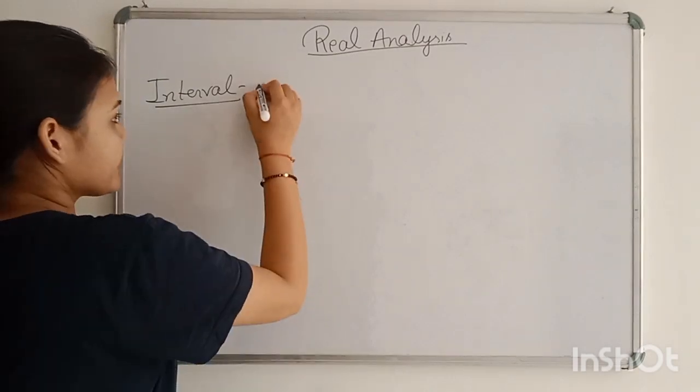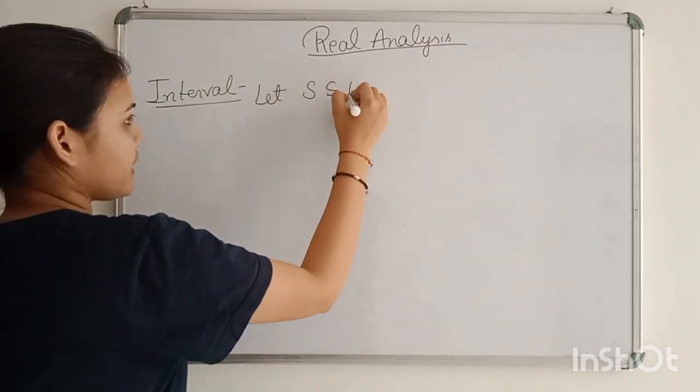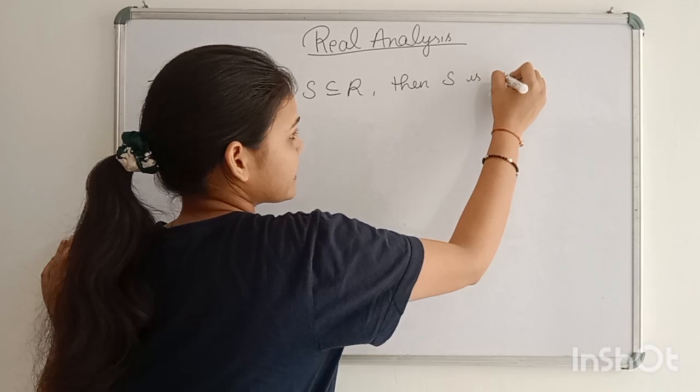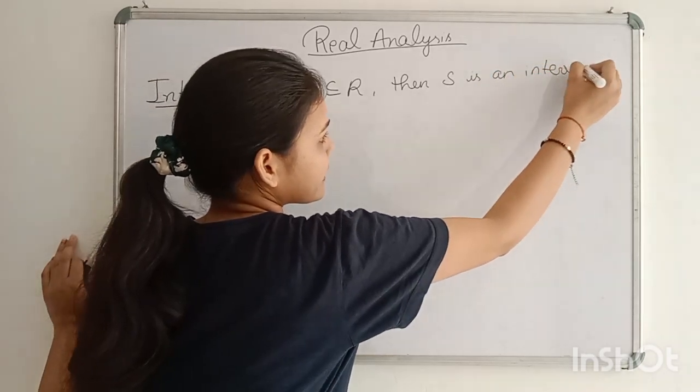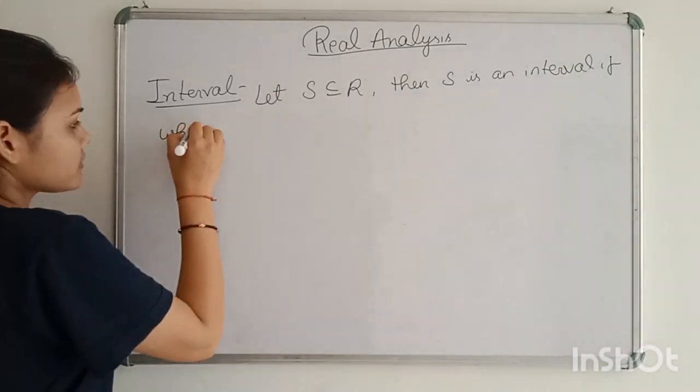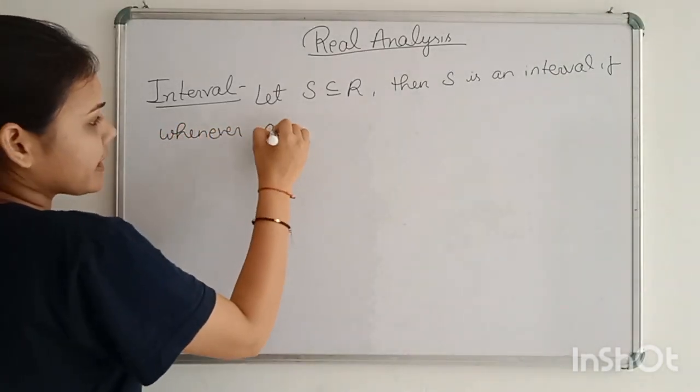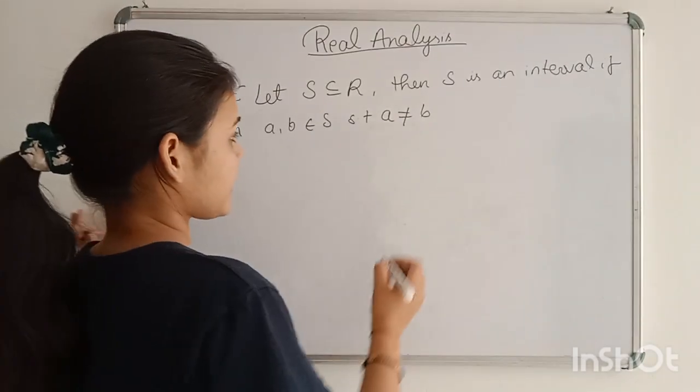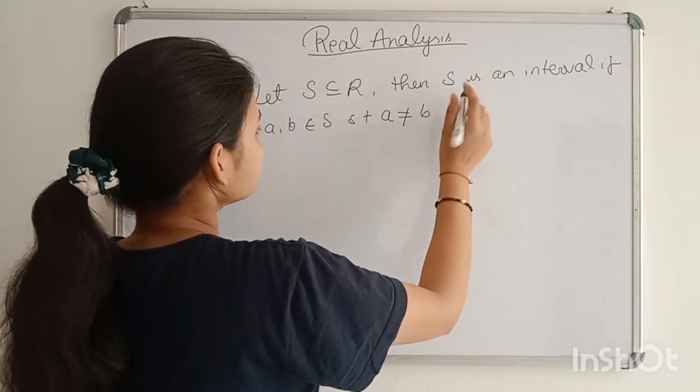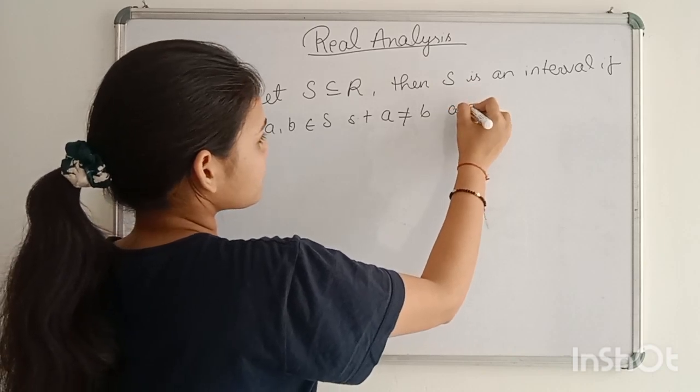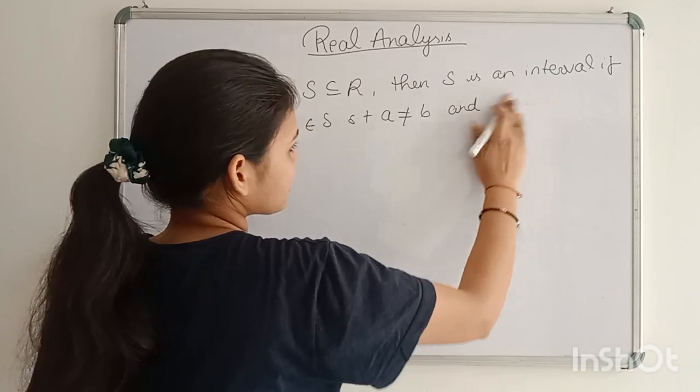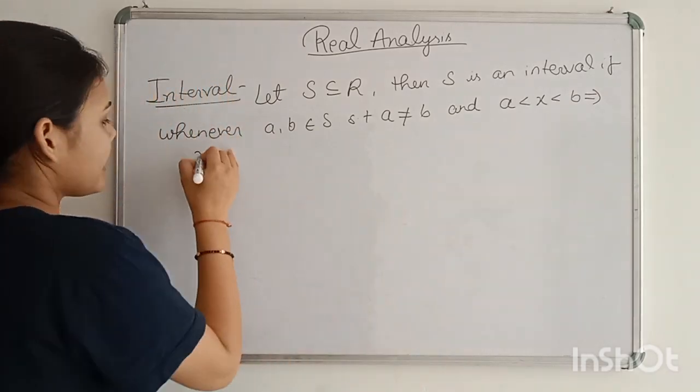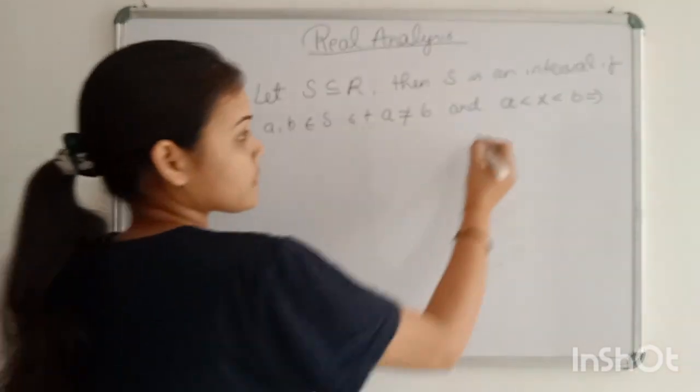What is the interval? Let S be a subset of R. Then, S is an interval if, whenever A, B belong to S such that A not equal to B, A less than X less than B implies X belong to S for all.